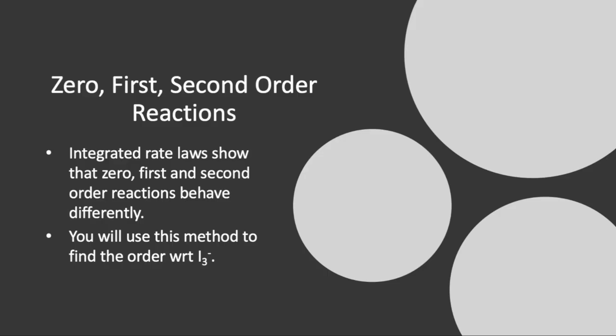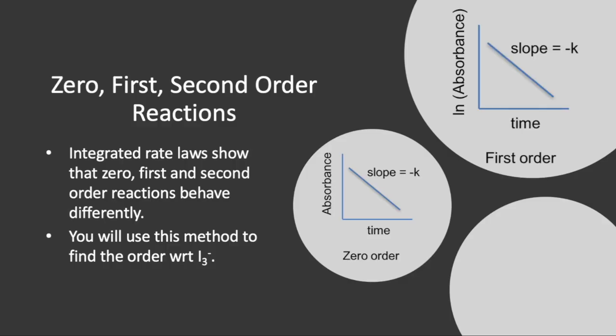There are three possibilities for the order with respect to I3-, and we're going to use a graphical method to determine it. The first option is zero order — absorbance versus time makes a straight line. The second option is first order — the natural log of absorbance versus time makes a straight line. The third option is second order — one over absorbance versus time makes a straight line. In the software, you just click on the axis and it will switch between these, so you can decide which one makes a straight line pretty easily.